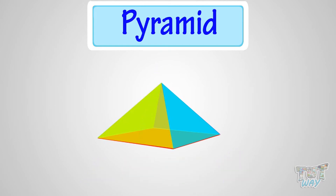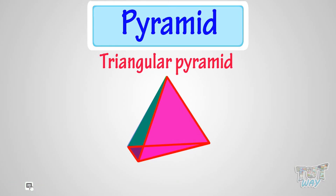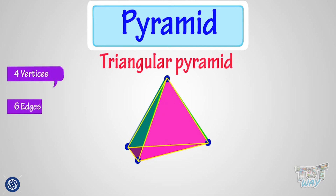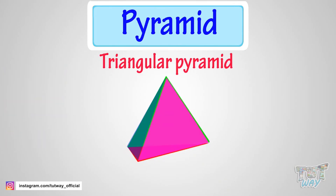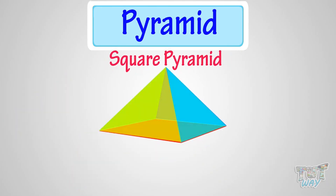The most common pyramids are with triangle and square bases. Here are some examples. This is a triangular pyramid, because its base is a triangle and all other faces are triangle, and converge to a single point. It has 4 vertices, 6 edges, and 4 faces.